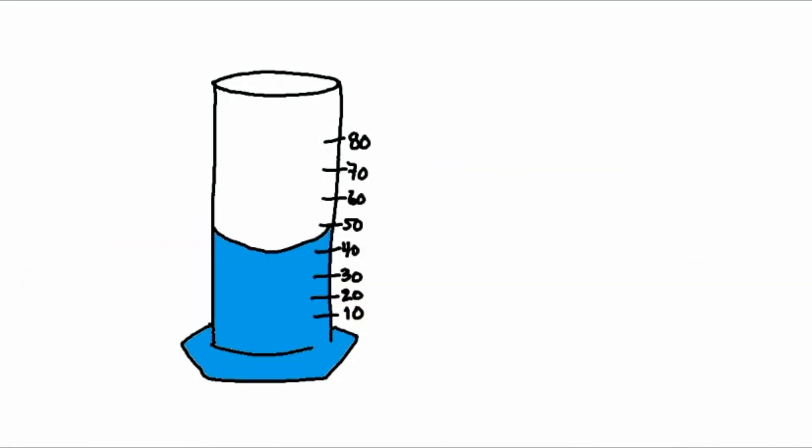A graduated cylinder can be helpful in finding the volume of a solid object as well. Take this graduated cylinder that has 40 milliliters of water. Let's say we have an object that has an irregular shape, not a cube or sphere, but an irregular shape such as a fidget spinner. How do we find the volume?